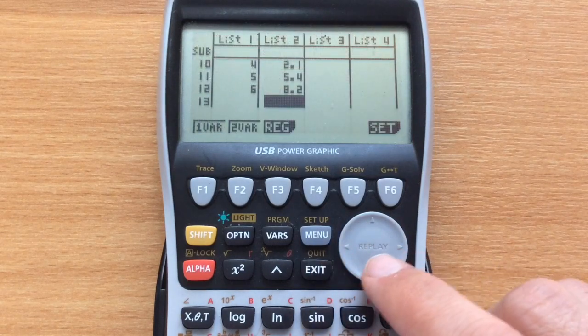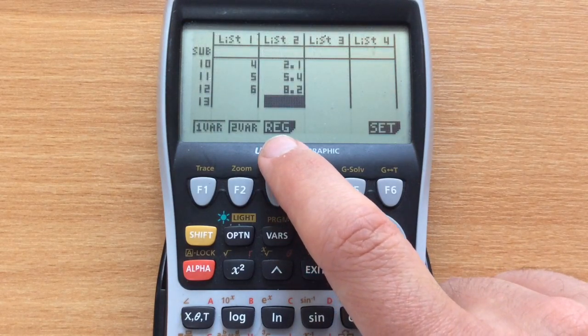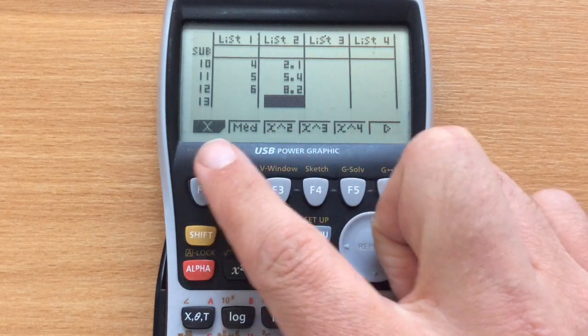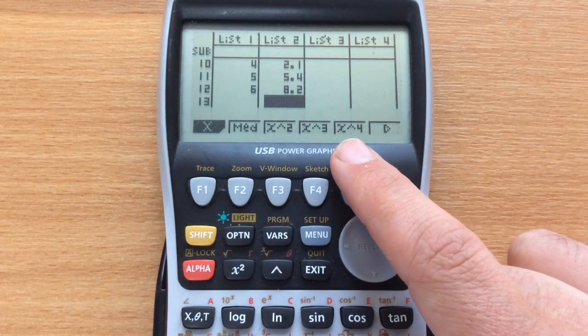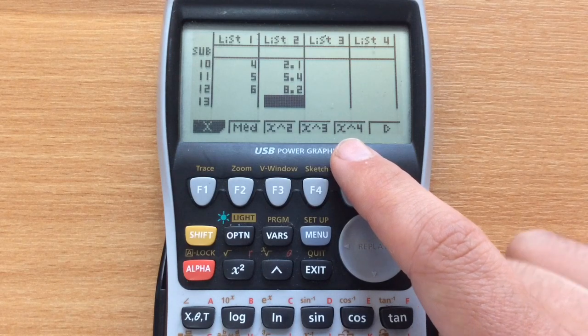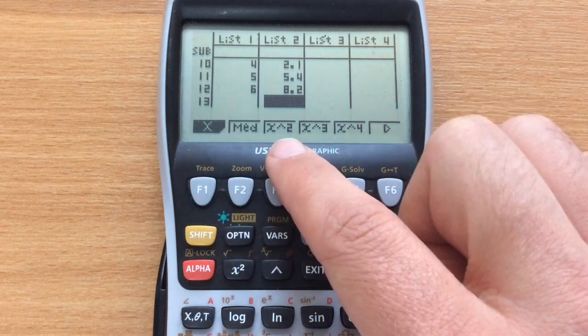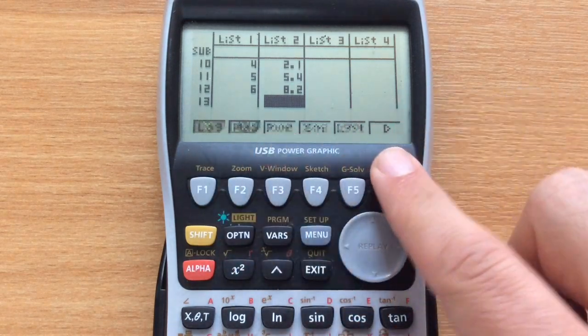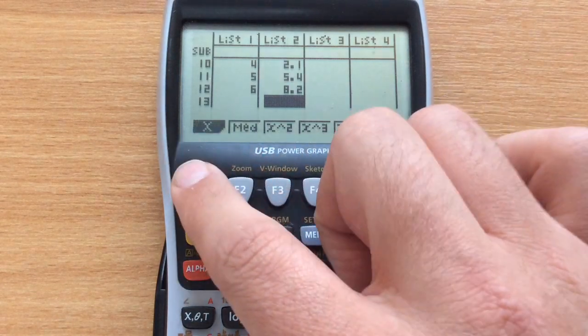Coming out of there, we then want to go into regression. Here we can do regression based on different curves. Usually we'll be looking at straight lines, so we're going to want to go into X rather than X squared or X cubed or any of these other peculiar functions that it will do as well.